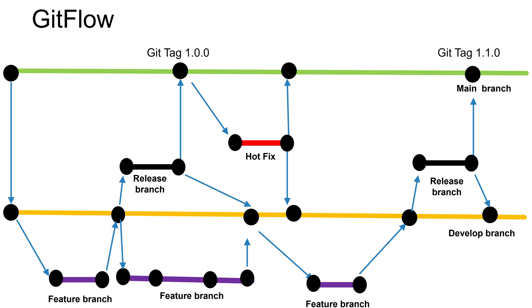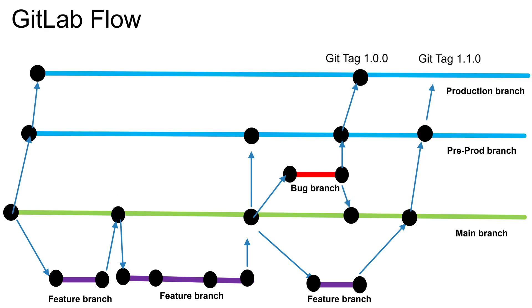This Git Flow strategy suits teams with longer release cycles. However, there is a higher possibility of missing to merge changes into one of the develop or main branches, making it prone to error. Make sure you are applying all fixes to both the main and develop branches. Finally, we have GitLab Flow.